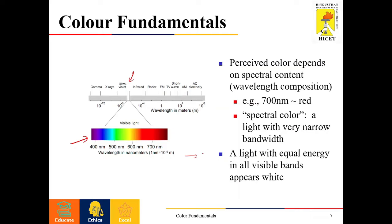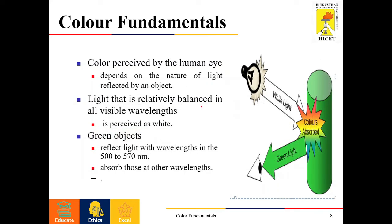White color is the combination of all the colors with equal energy — that is, light with equal energy of all visible bands appears white in nature. The perceived color depends on the nature of light reflected from an object. White light incident on any object may be absorbed or reflected back. If an object appears green, it means it absorbs all wavelengths except the green wavelength — only the green wavelength is reflected. The reflected light has wavelengths ranging from 500 to 570 nanometers.